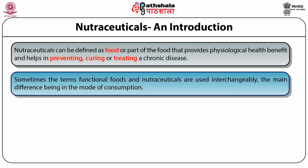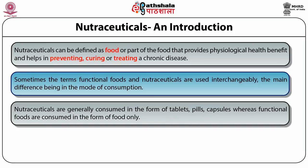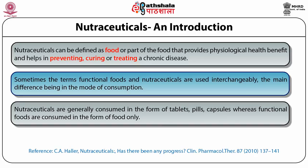Sometimes the terms nutraceuticals and functional foods are used interchangeably, the main difference being in the mode of consumption. Nutraceuticals are generally consumed in the form of tablets, pills, or capsules, whereas functional foods are consumed as food. We have seen the availability of many nutraceuticals in the market, such as omega-3 fatty acids, cod liver oils, beta-carotene, lutein, and cryptoxanthin capsules.